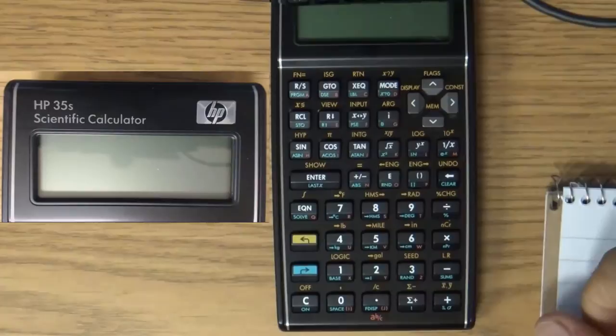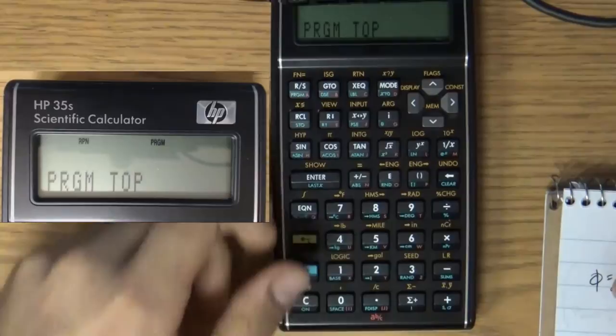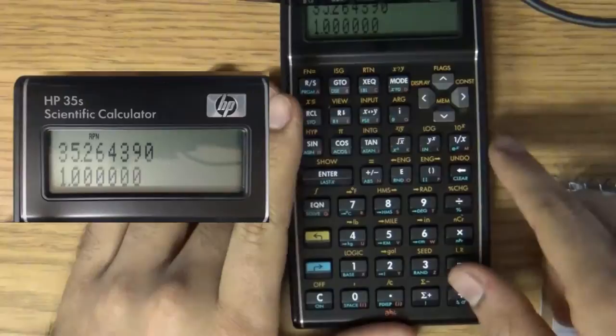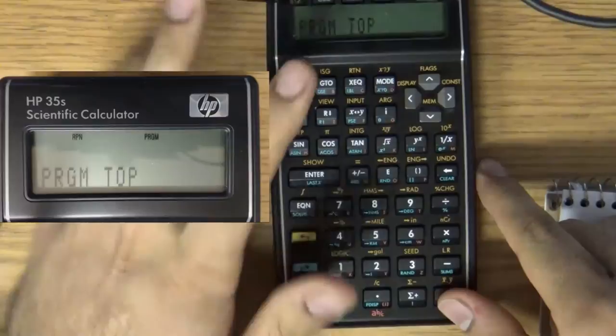And I'll put up a tutorial on how to use RPN a little later. In fact, this one might go up afterwards. I'm not sure. Anyway, let's begin. So, you're going to start off with your calculator looking something like this, just in the home mode. You're going to want to enter program mode first.